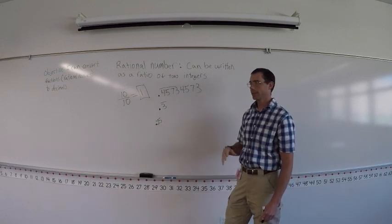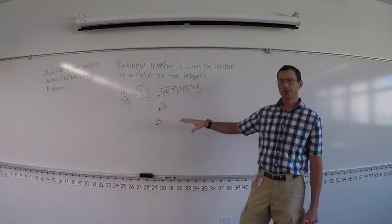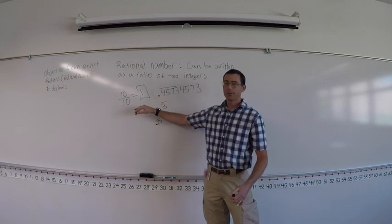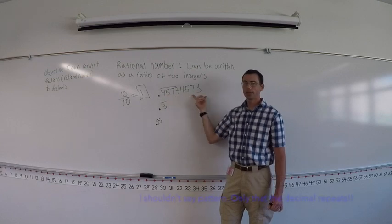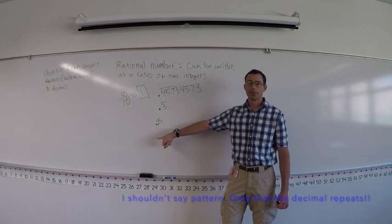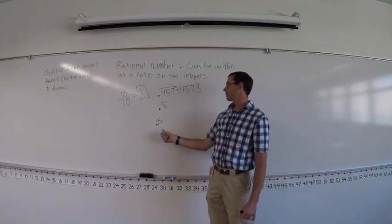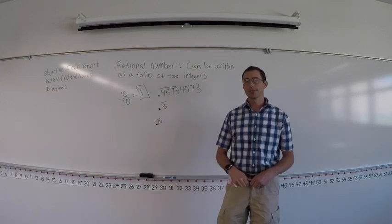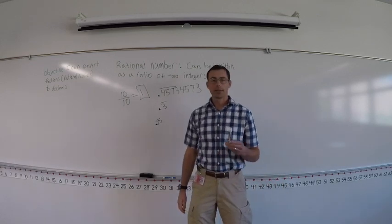So if you see a decimal and want to know if it's rational — is it a whole number? Is it repeating? Is there a pattern? Or does it terminate? Next time you're at the store and see something that's a dollar twenty-five, that's a rational number because it doesn't repeat and it doesn't go past the point two five. And that's all for this video.